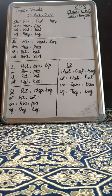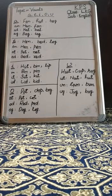Dear students, do you know how many letters there are? There are total 26 letters. Among them, 5 are vowels and the remaining 21 are consonants.